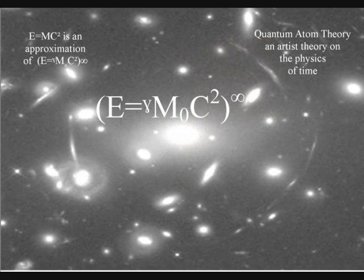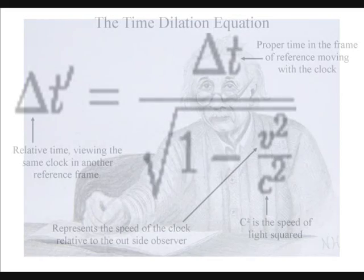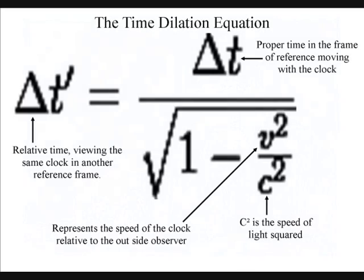The brackets represent the boundary condition of the reference frame formed by the energy, and the infinity symbol represents an infinite number of reference frames that make up our universe. In this way, we link the time dilation of Einstein's theories on relativity with a deeper understanding of quantum mechanics.